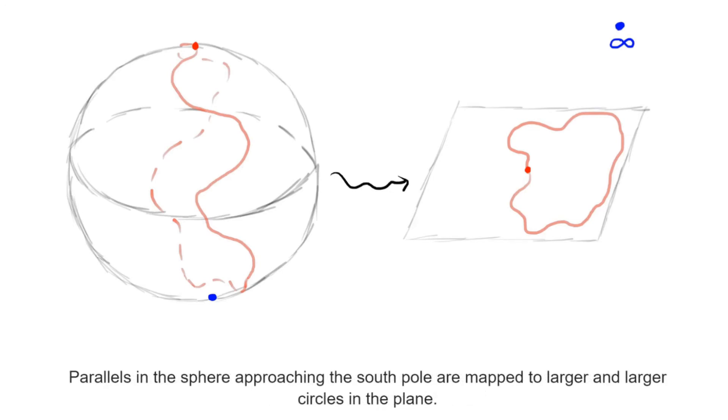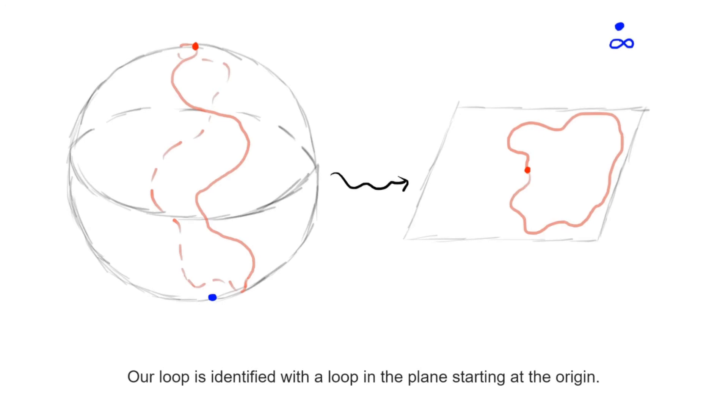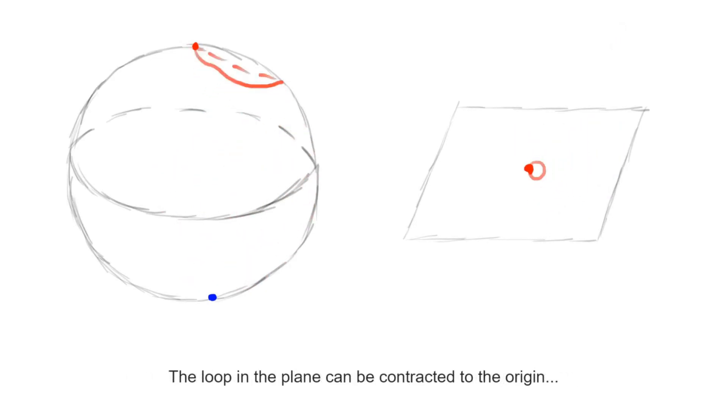Using this stereographic projection, we can regard our loop in the sphere as a loop in the plane. Since the plane is convex, much like the disk was before, what we can do is simply use linear interpolation to take our loop in the plane to the constant loop.